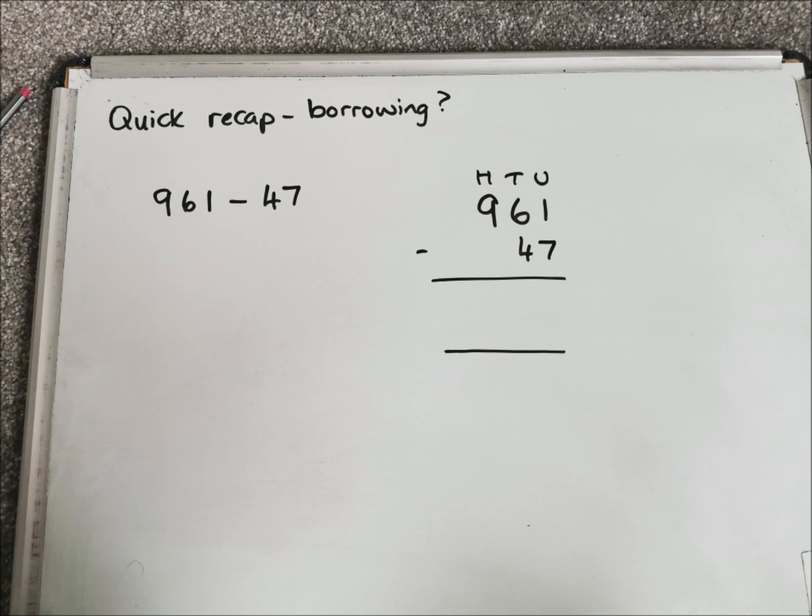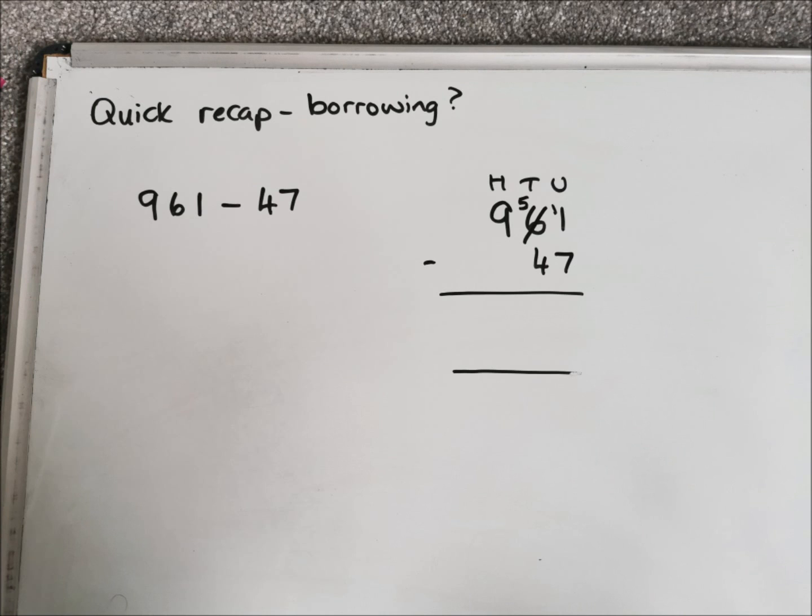So we're going to start in the units. So in the units at the moment, we have got 1 take away 7. Now it's pretty hard to do 1 take away 7 without borrowing. So what we do is something that looks like this. We score out the 6 and it becomes 5, and we add a 1 to the units 1, which becomes 11.